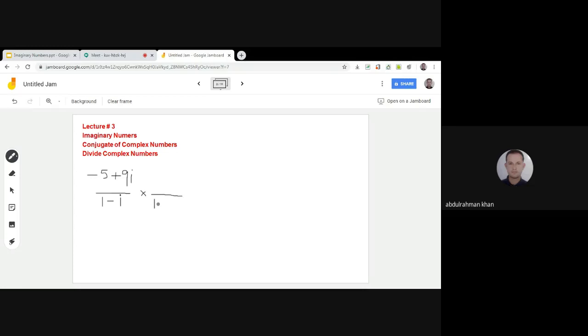The conjugate is 1 plus i. So, numerator and denominator, we multiply by the conjugate. Up number multiplied with up and down with down. Numerator with numerator and denominator with denominator. Minus 5 plus 9i times 1 plus i.